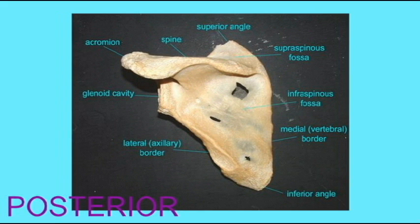On the posterior side of the scapula, you can observe the glenoid cavity, that socket for the shoulder joint.